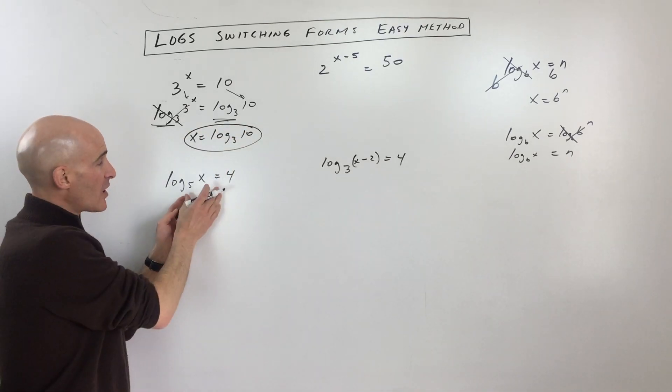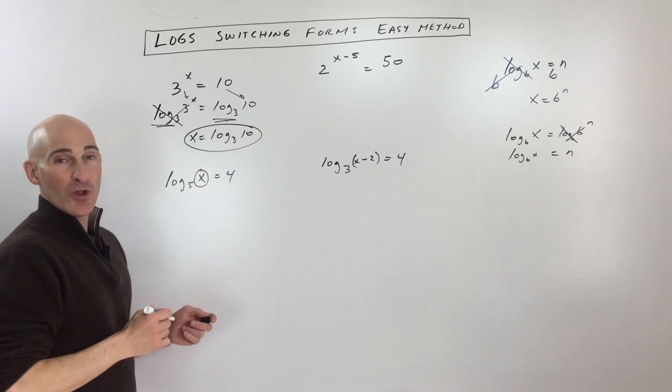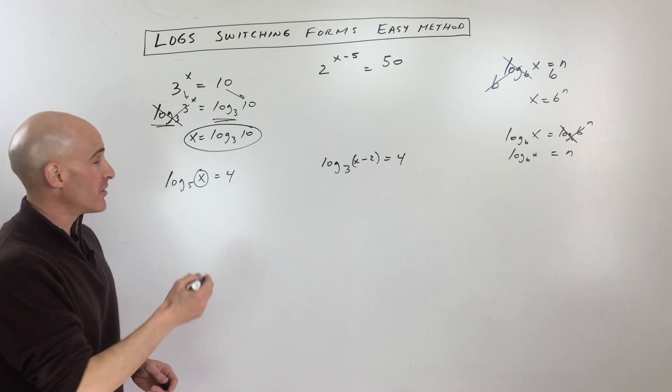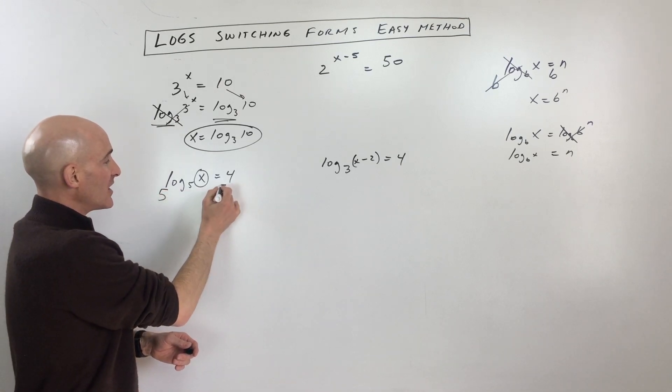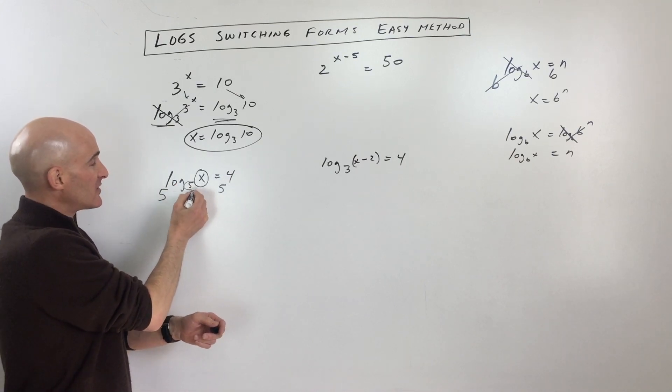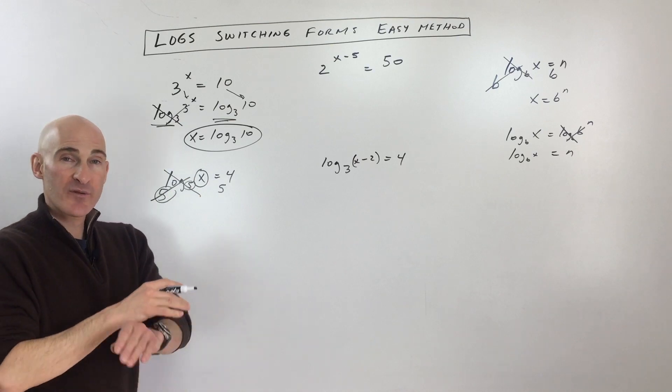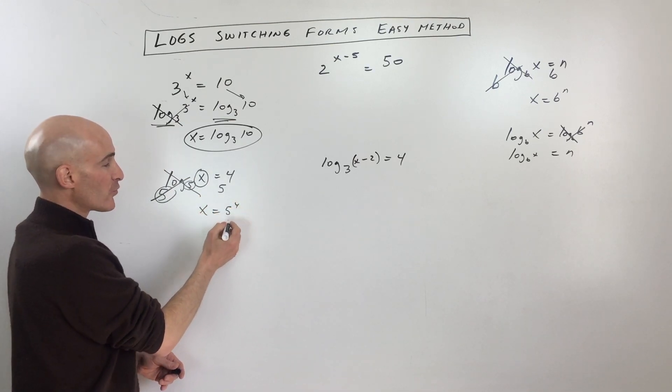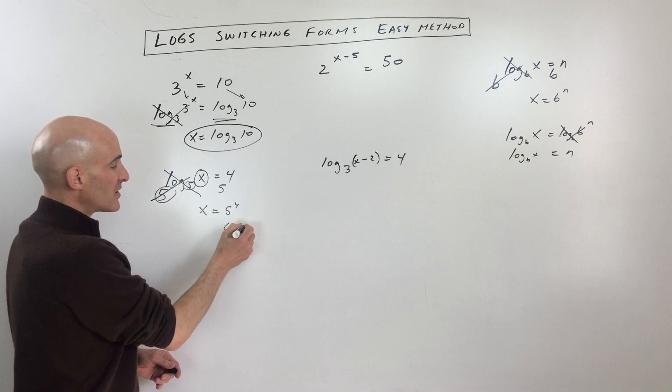The second example, we're starting off with a log, we're trying to solve for a variable x, we want to get rid of this log, so we're going to do the inverse of taking the logarithm, which is to exponentiate, or raise both sides using base 5. The key is you want to make sure that these bases are the same. So exponential functions and logarithmic functions are inverses, they undo one another, and so we just get x equals 5 to the 4th power, which we know is 625.